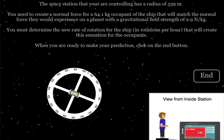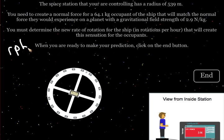In this problem, we're going to be looking at how quickly we need to spin this space station in terms of revolutions per hour to create the sense of a gravitational field of 2.9 newtons per kilogram.